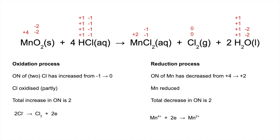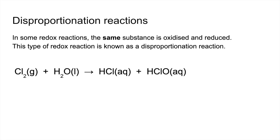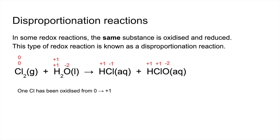We'll take a look at disproportionation reactions now. These are special types of redox reactions where the same substance is both oxidized and reduced. The example used is the reaction between chlorine and water. Looking at the oxidation numbers, chlorine has gone from zero to minus one and from zero to plus one — that's why this is disproportionation. One chlorine has been oxidized and one chlorine has been reduced.